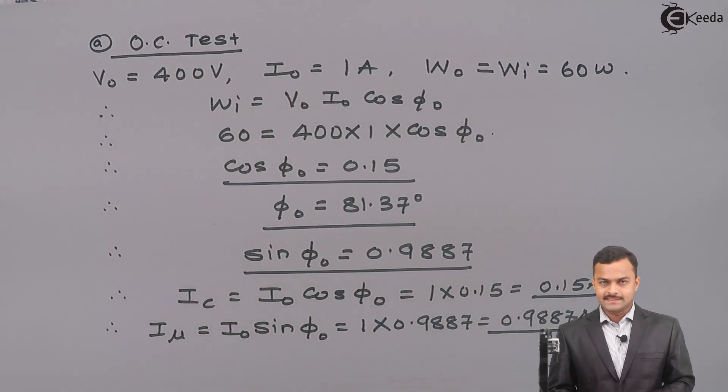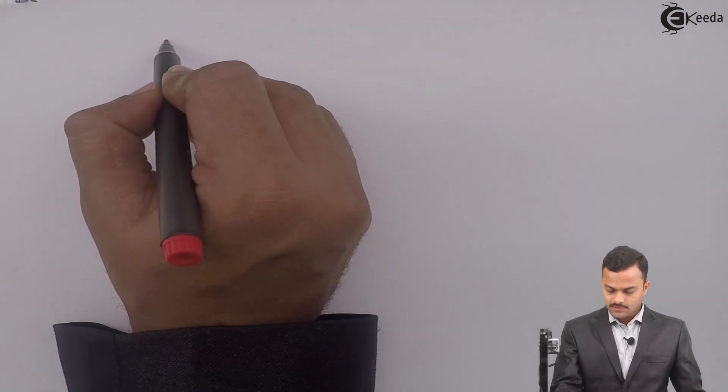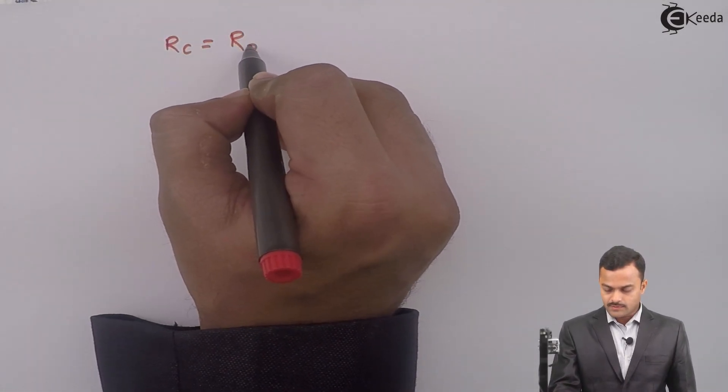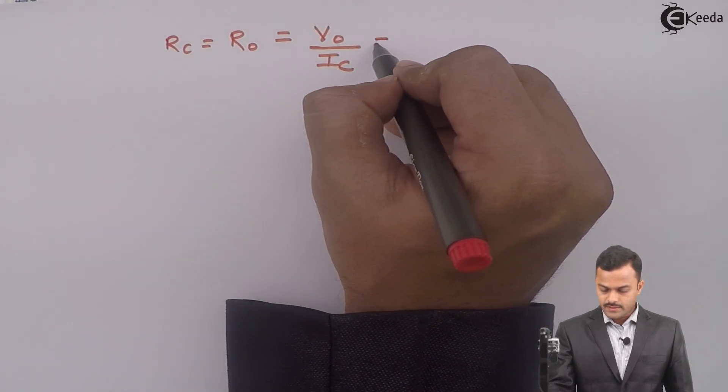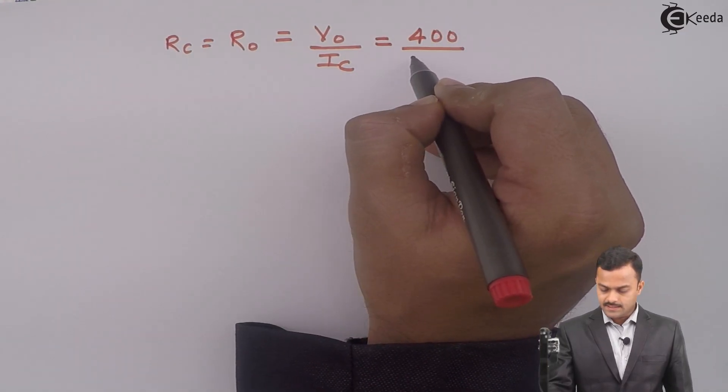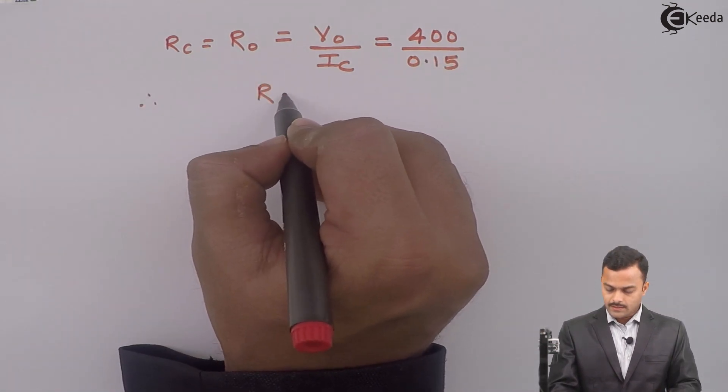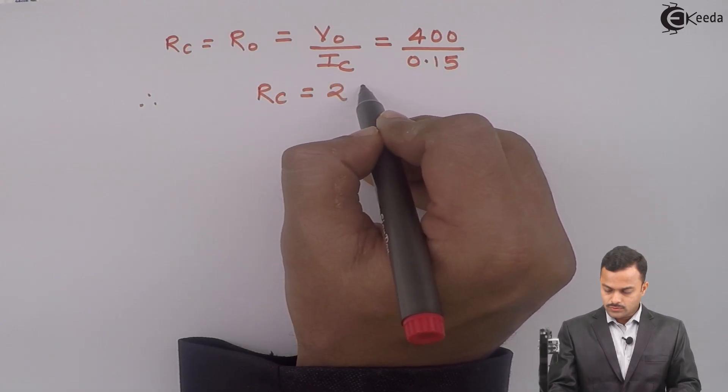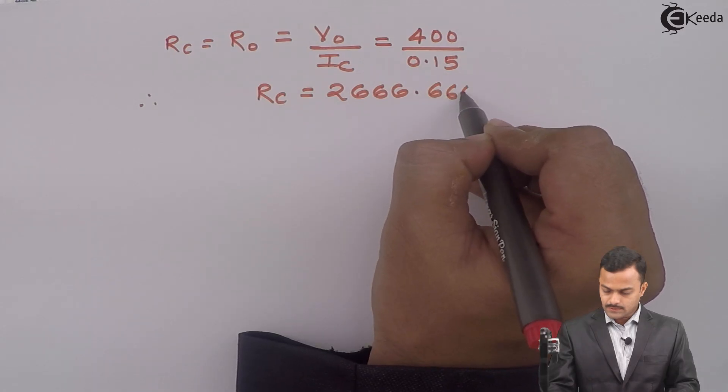Now, IC is flowing through RC where V0 is the voltage applied across that parallel branch where RC and XM is connected. So, I can get RC nothing but no load resistance of the transformer equal to V0 by IC. So, V0 is 400 and IC is 0.15. So, if we solve you will get RC equal to 2666.6667 ohm.